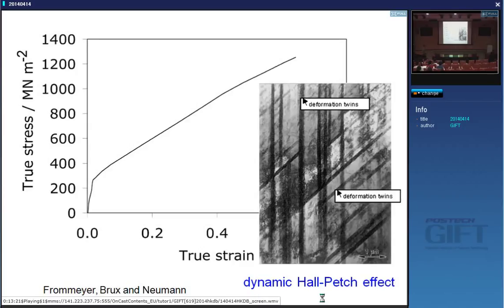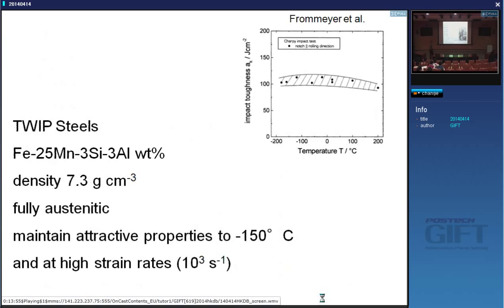There are other effects as well, but the dominant effect is subdividing the austenite grain by deformation. It is this work hardening that prevents the onset of plastic instability, and that is why you get a very large elongation. This is also why you need a very high manganese concentration — a typical composition has very high manganese.